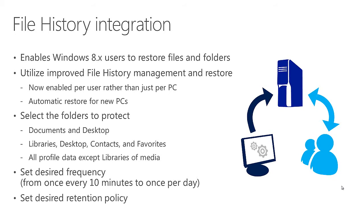You can select which folders to protect - generally your documents folder, the desktop, defined libraries, and favorites - giving you rich user data protected centrally on the server. You can set the frequency of how often File History is collected, from as often as once every 10 minutes to just once per day. You can also set the retention policy for how long things are kept - indefinitely until you run out of space, or refined to use less disk space.